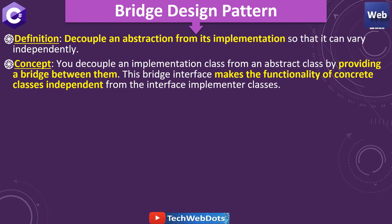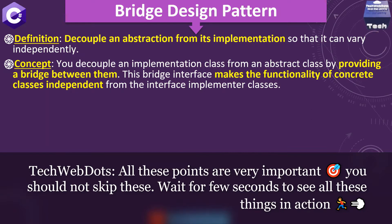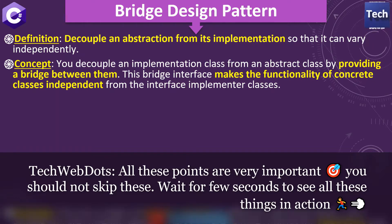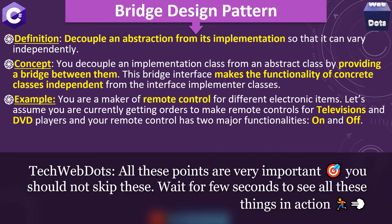You decouple an implementation class from an abstract class by providing a bridge between them. This bridge interface makes the functionality of the concrete class independent from the interface implementer class. These points may not be fully clear yet, but don't worry — I will explain them again in the upcoming discussion.